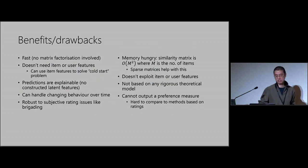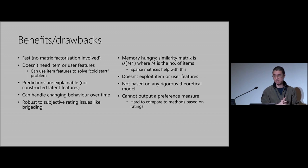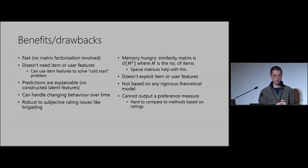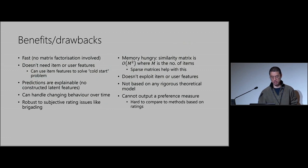Benefits and drawbacks. First, this is actually very fast — there's no matrix factorization involved. The matrix multiplication is still a bit slow, but thanks to RCPP Armadillo, developed by the guys across the road at Griffith University — shout out to Conrad at Data61 — it's actually very fast. It doesn't need item or user features, making it applicable to a very wide range of datasets. You may want recommendations but not have ratings, or features may be in a separate database requiring costly joins. For this, all you really need is a table of transactions: who bought what? Predictions are explainable, and you can handle changing behavior.